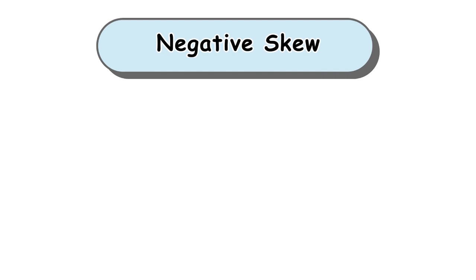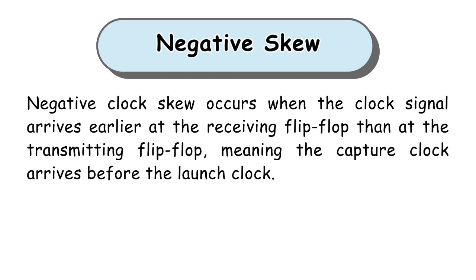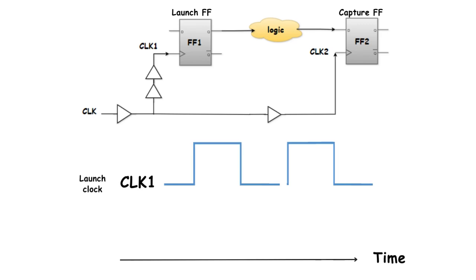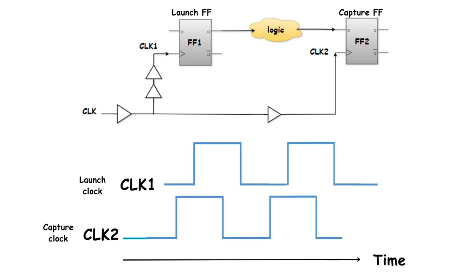Now let's see negative skew. Negative clock skew occurs when the clock signal arrives earlier at the receiving flip-flop than at the transmitting flip-flop, meaning the capture clock arrives before the launch clock. For example, in this case, the capture clock arrives before the launch clock, introducing a delay at the source compared to the destination.